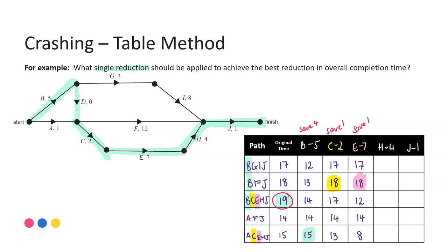Looking at activity H — H is in the third and fifth paths. No change for the first and second pathways. The third one: 19 minus the duration of 4 brings me down to 15. No change for the fourth pathway. For the fifth pathway, 15 minus 4 gives us 11. Our longest path there — 18 — so with H I'm again able to save 1.